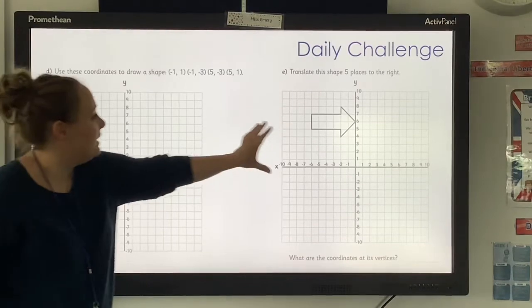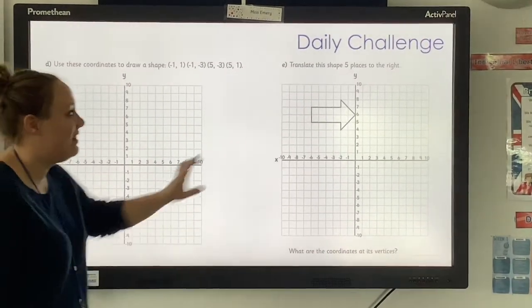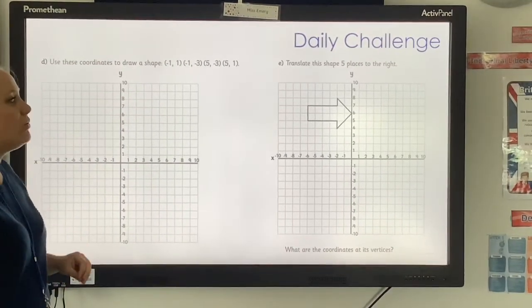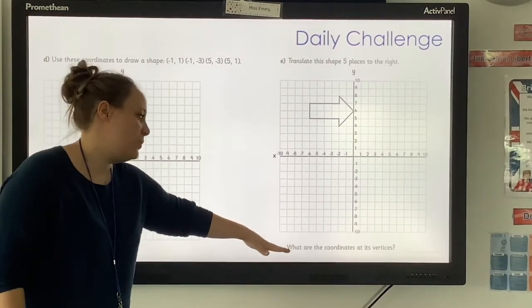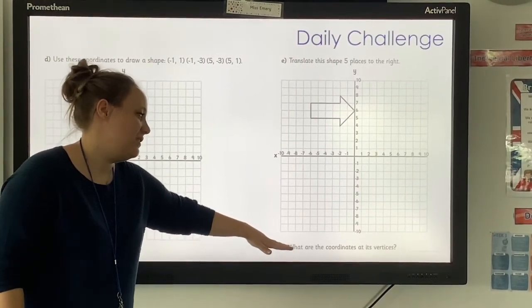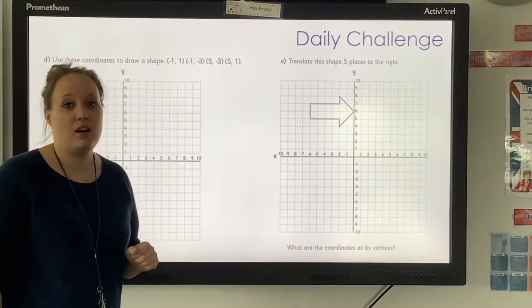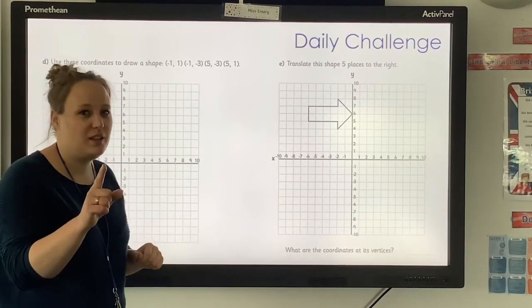Then, over here, it asks you to translate this shape five places to the right. And then it asks you what are the coordinates at its vertices. So move the shape and then say what its coordinates are. Good luck. I will show you the answer in a moment.